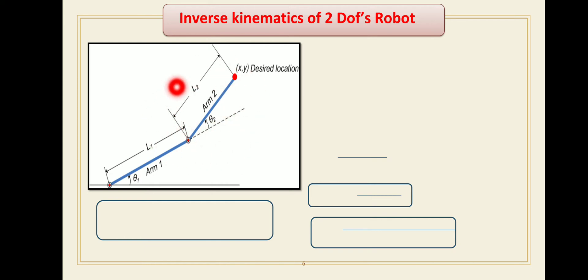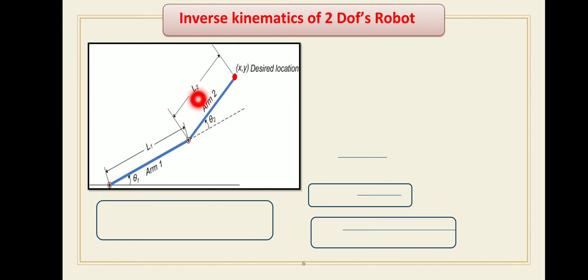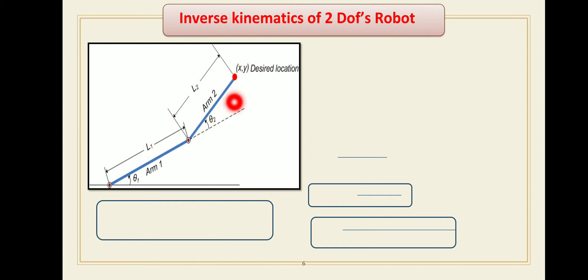This is the line diagram of a two degrees of freedom robot. This is link number one and link number two. L1 is the length of link number one, L2 is the length of link number two, and these are joint number one and joint number two. In forward kinematics, the four parameters L1, L2, theta1, and theta2 are given, and you find the unknown position px,y. In inverse kinematics, the Cartesian coordinates x and y are given, and you find theta1 and theta2.